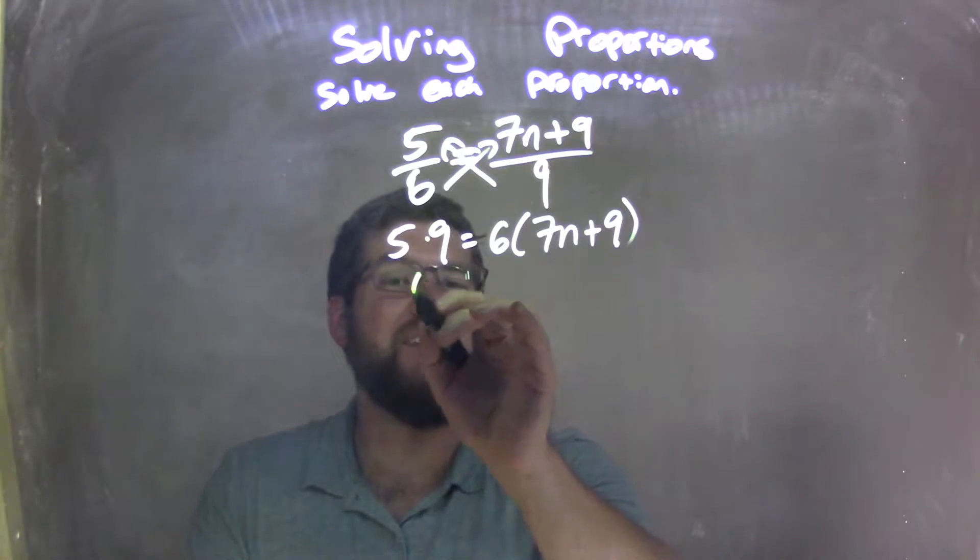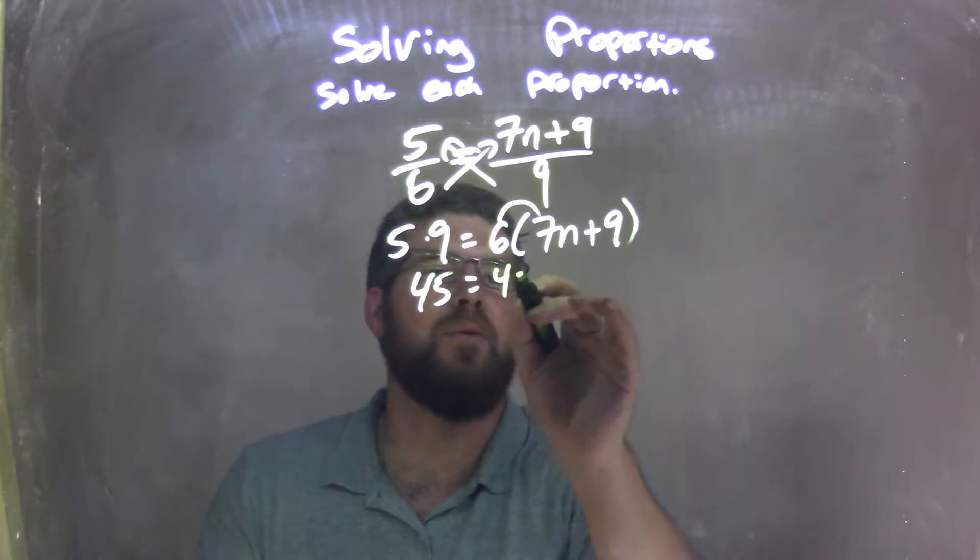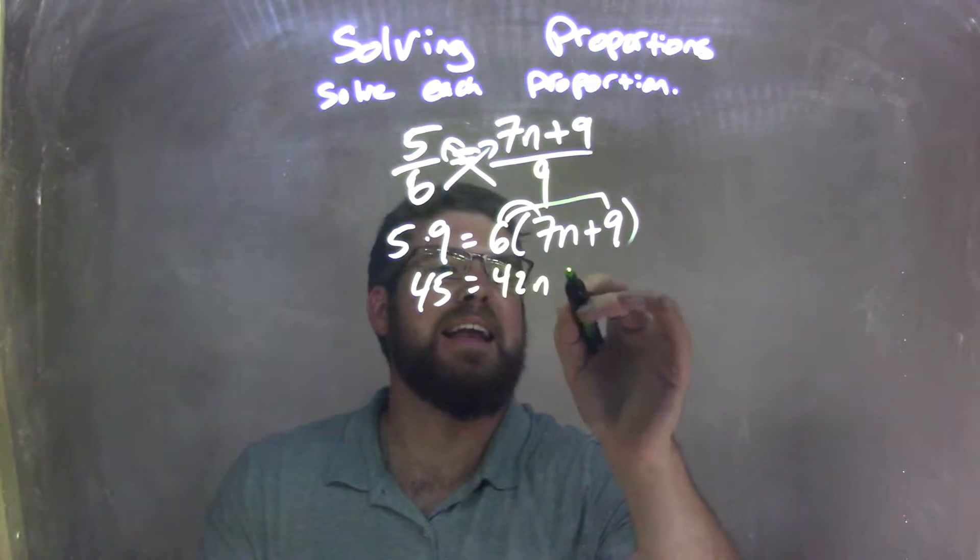5 times 9 is 45, and I distribute the 6. 6 times 7n is 42n, and 6 times 9 here.